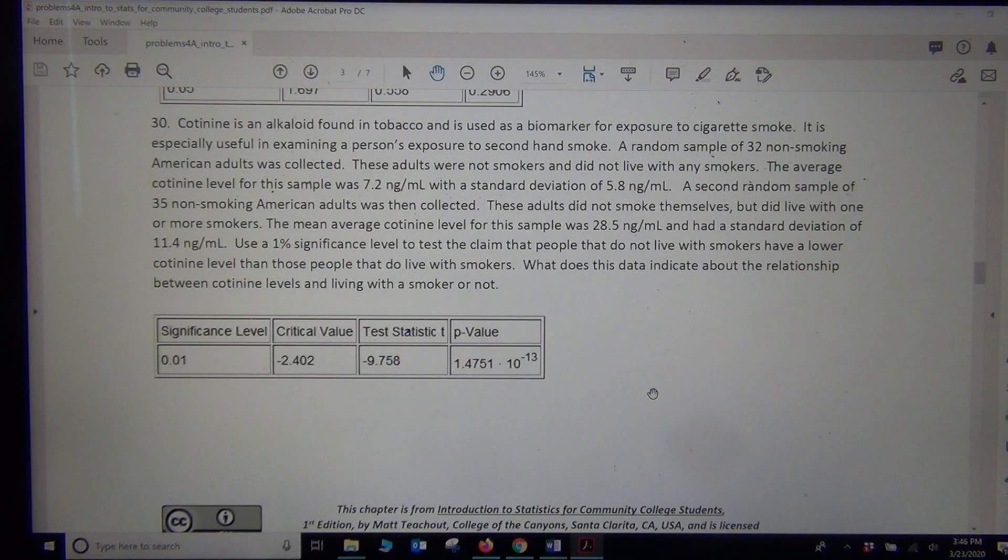Use a 1% significance level to test the claim that people that do not live with smokers have a lower cotinine level than those that live with smokers. So let's be clear, none of the people in this data smoke. But some of them live with smokers and some don't. And they're saying that the people that do not live with smokers have a lower cotinine level than those that live with smokers.